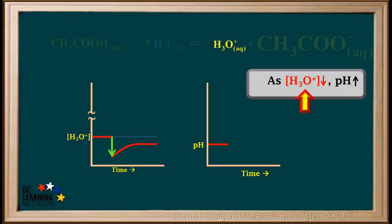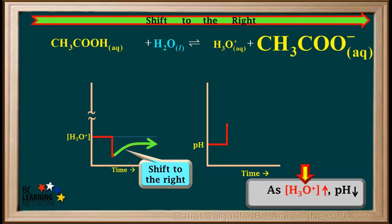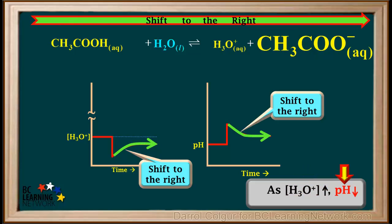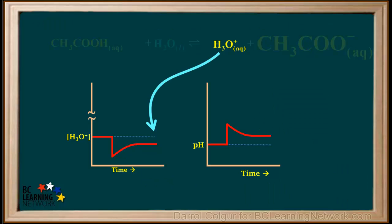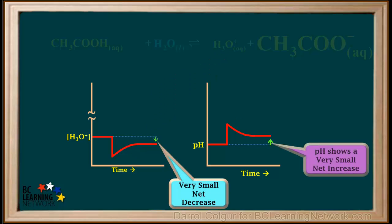So when the base was first added, as the hydronium ion concentration goes down, the pH goes up. As the shift to the right occurs and the concentration of hydronium gradually increases, the pH gradually decreases. So in the overall process, as the hydronium ion concentration shows a very small net decrease, the pH shows a very small net increase.